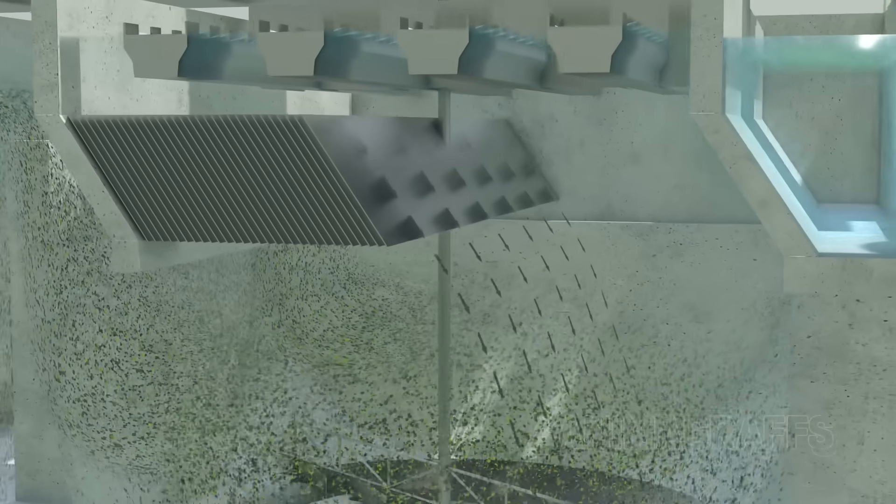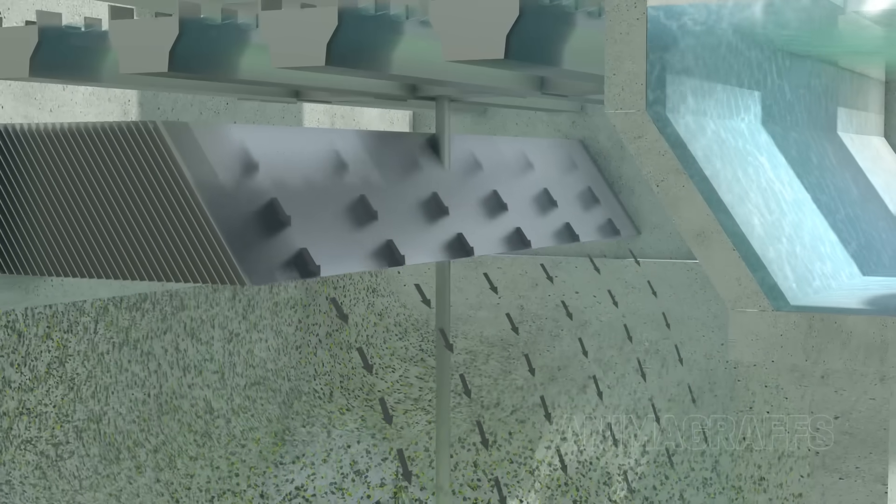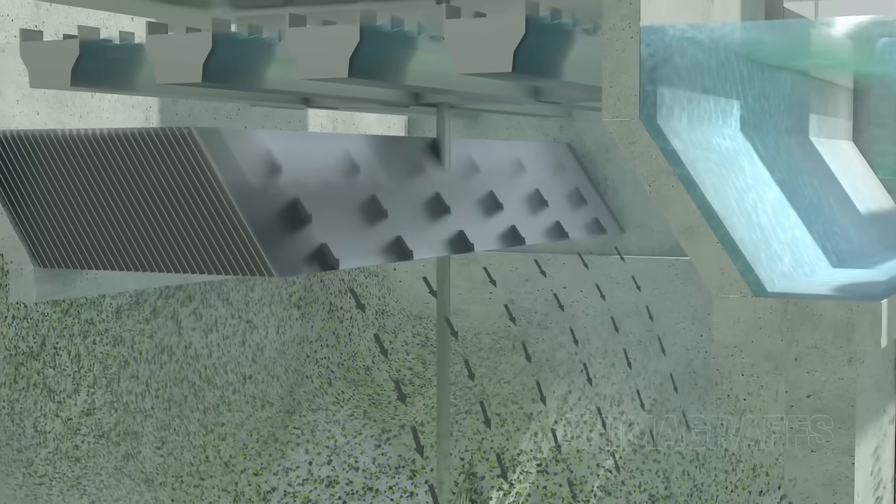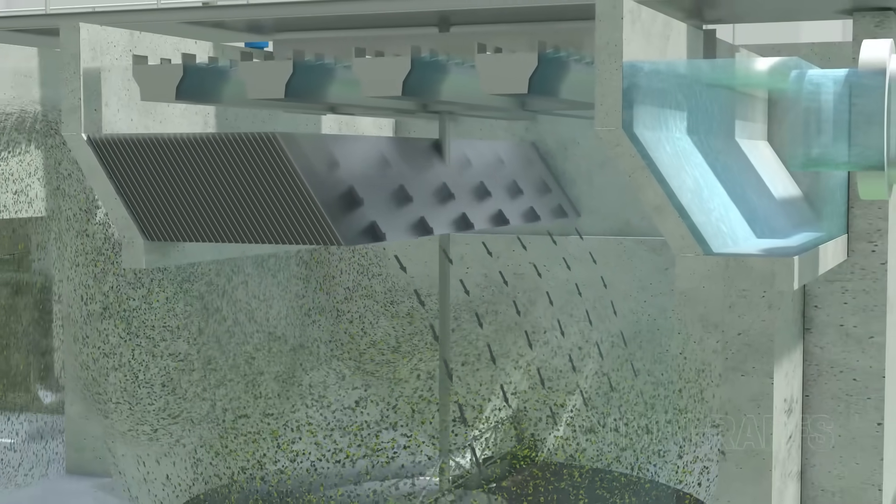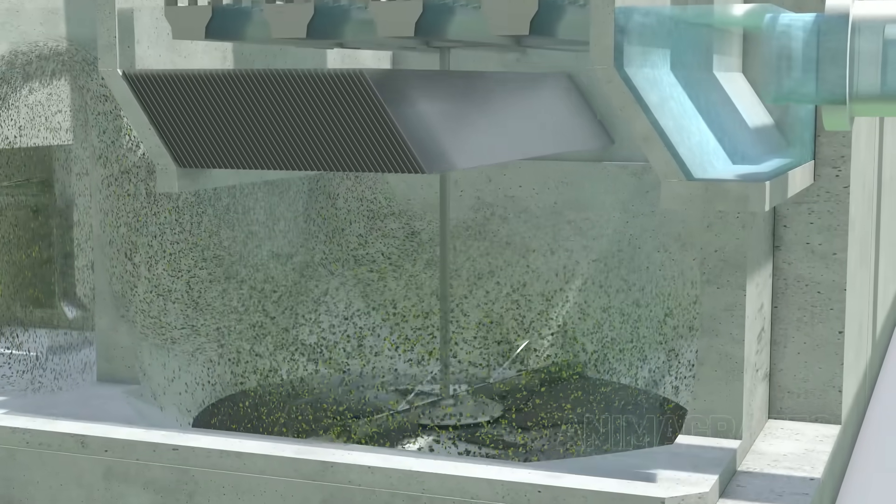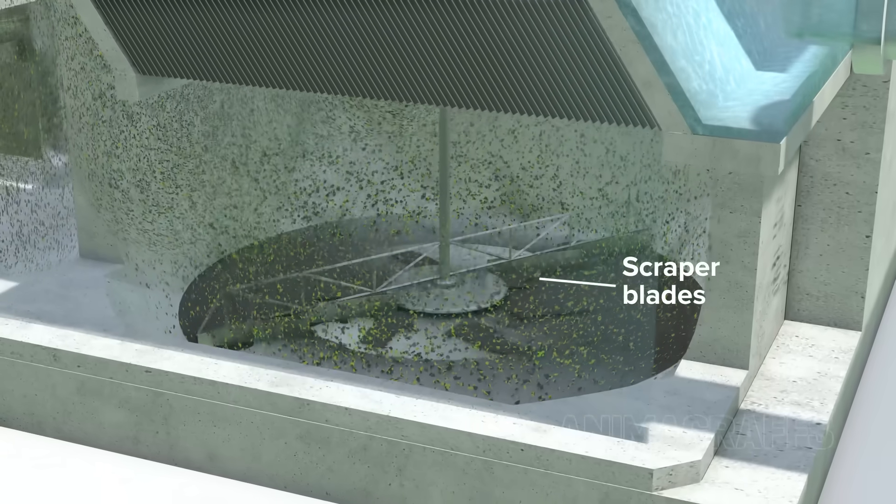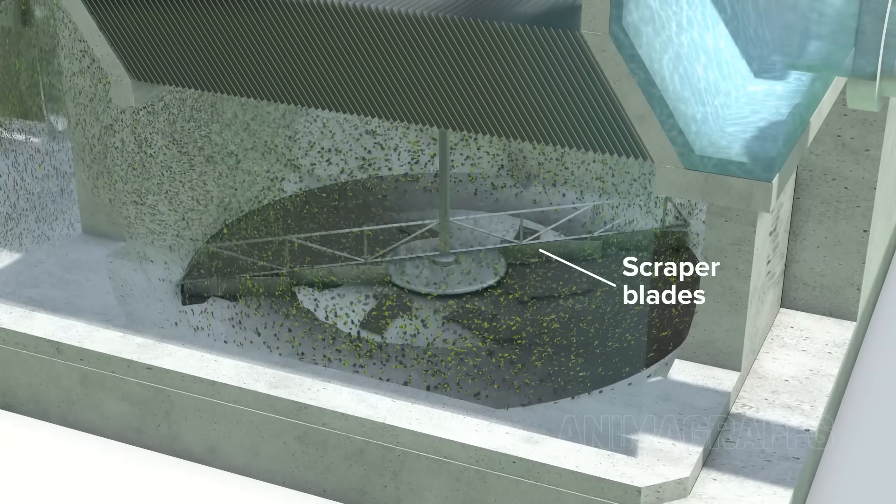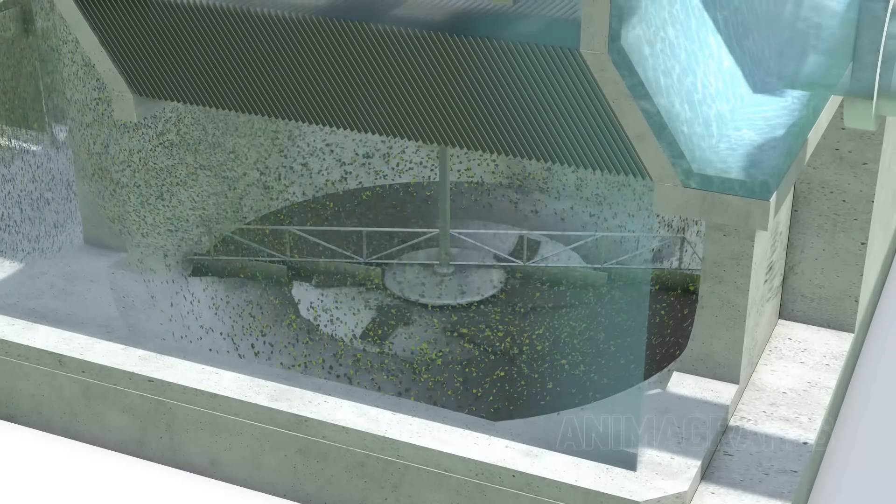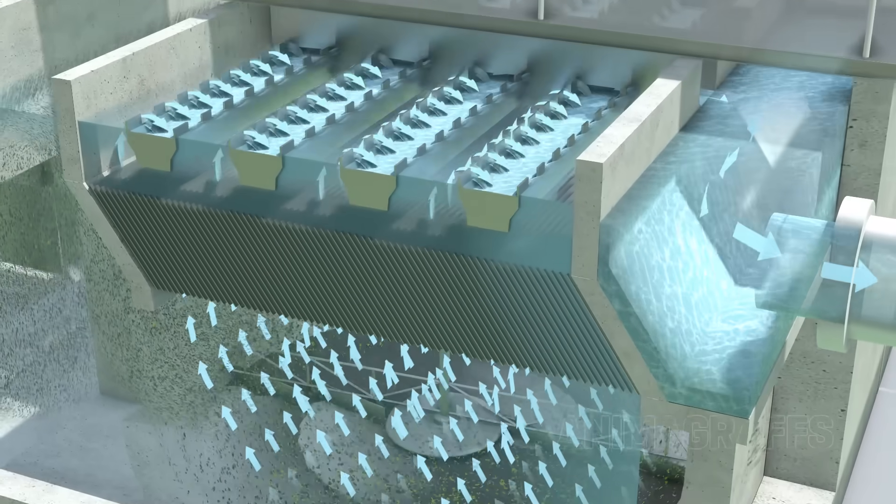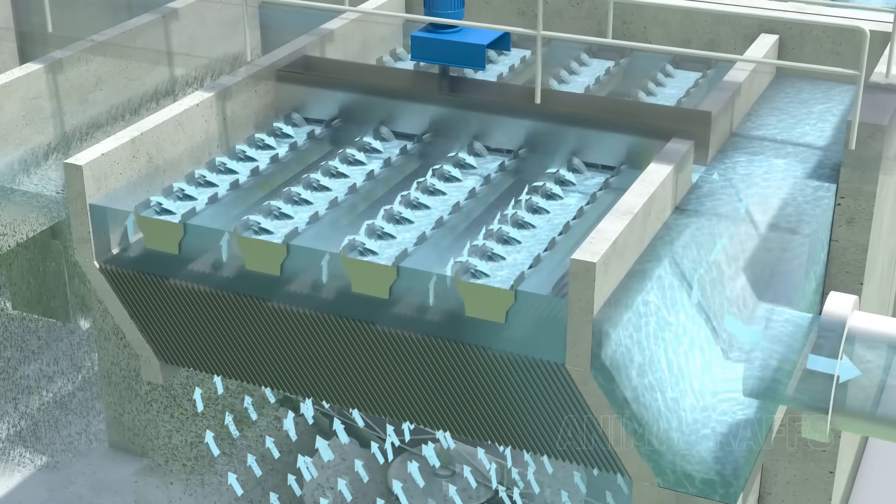Any remaining suspended particles collide with an array of angled plates and slide down to the settling zone. Slowly rotating scraper blades continuously remove the combined sludge and sand layer from the bottom of the tank, while clarified water flows upwards into collection troughs.